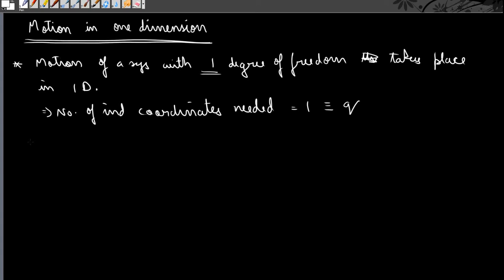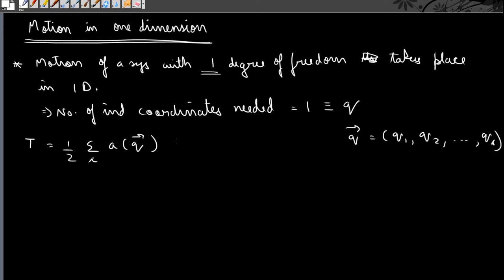We have seen in our previous lectures that in general our kinetic energy term is given by the summation over i of some function of vector q — where q is basically q1, q2, ... qs and s is the number of degrees of freedom — times q-dot_i q-dot_j. This is the general form of the kinetic energy, but when s equals one this will simply become half a(q) q-dot squared.